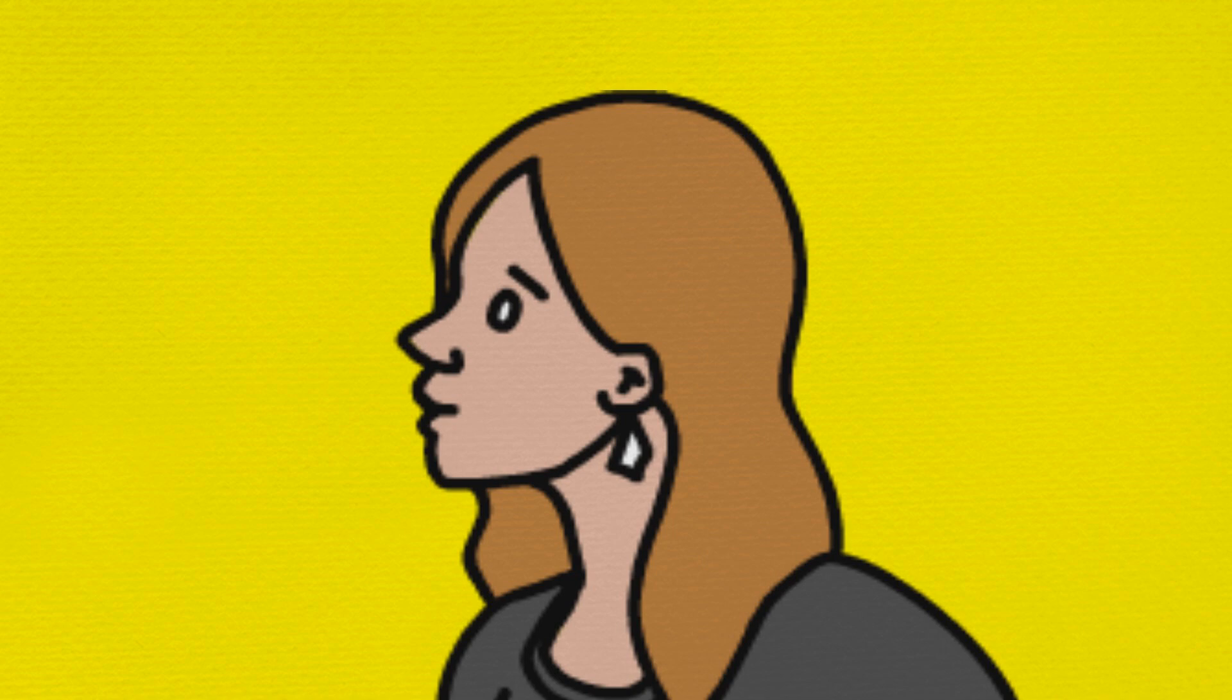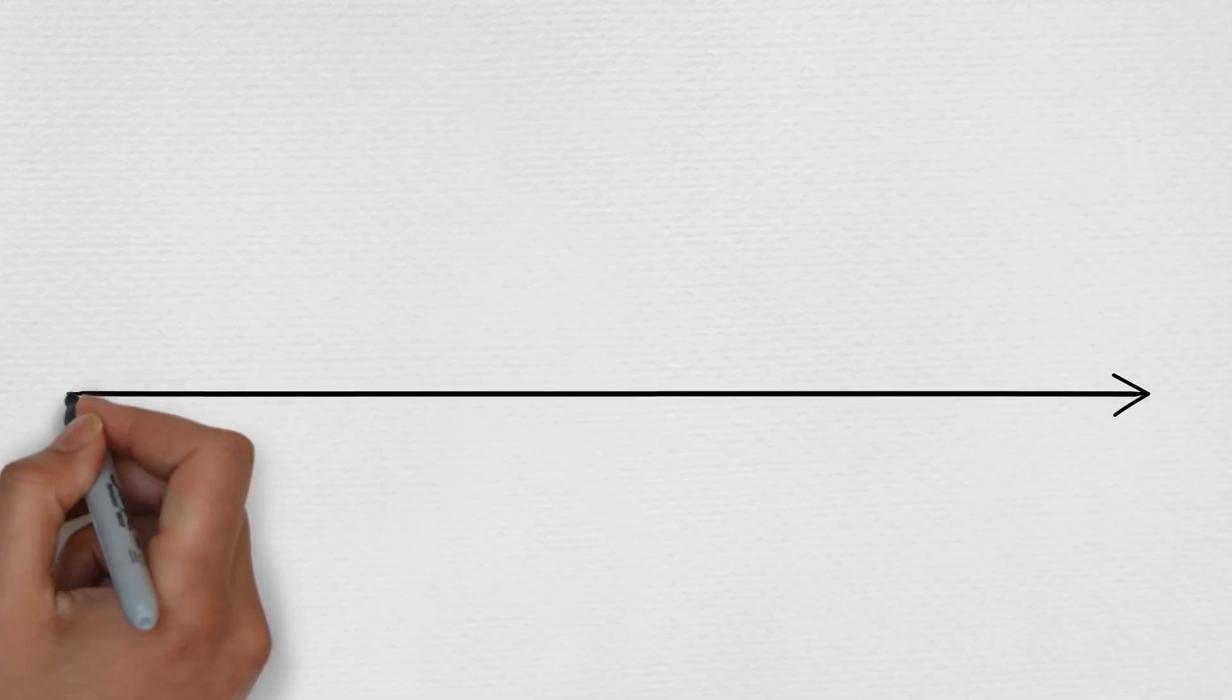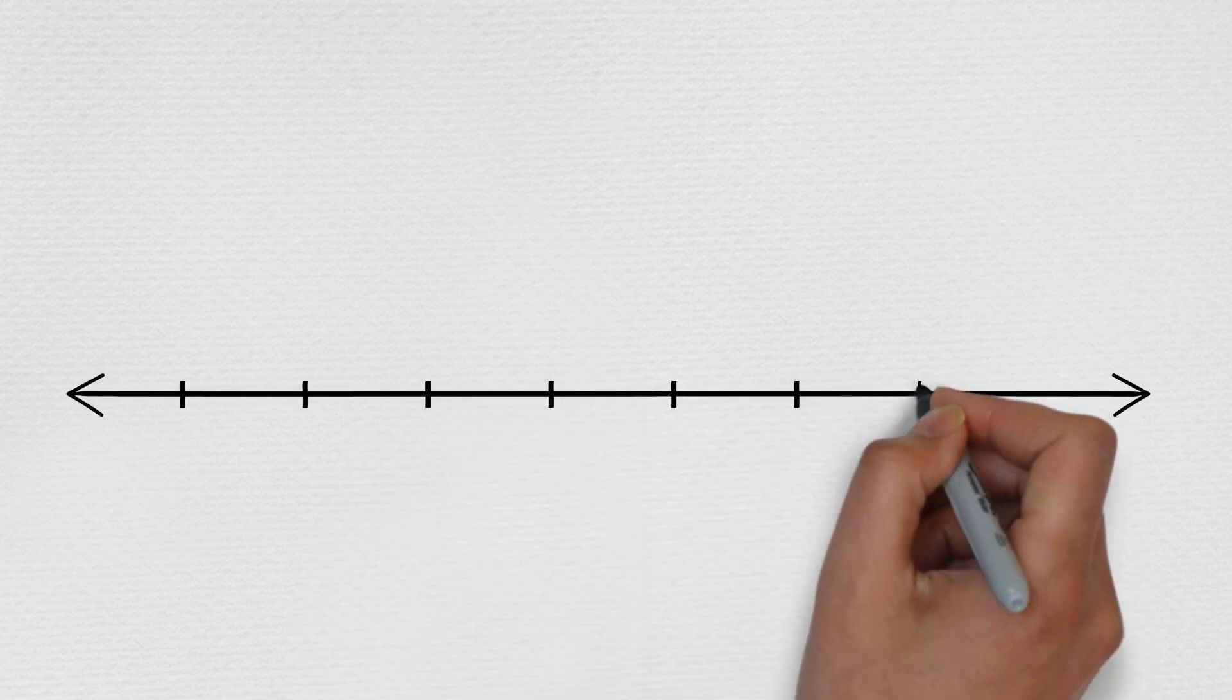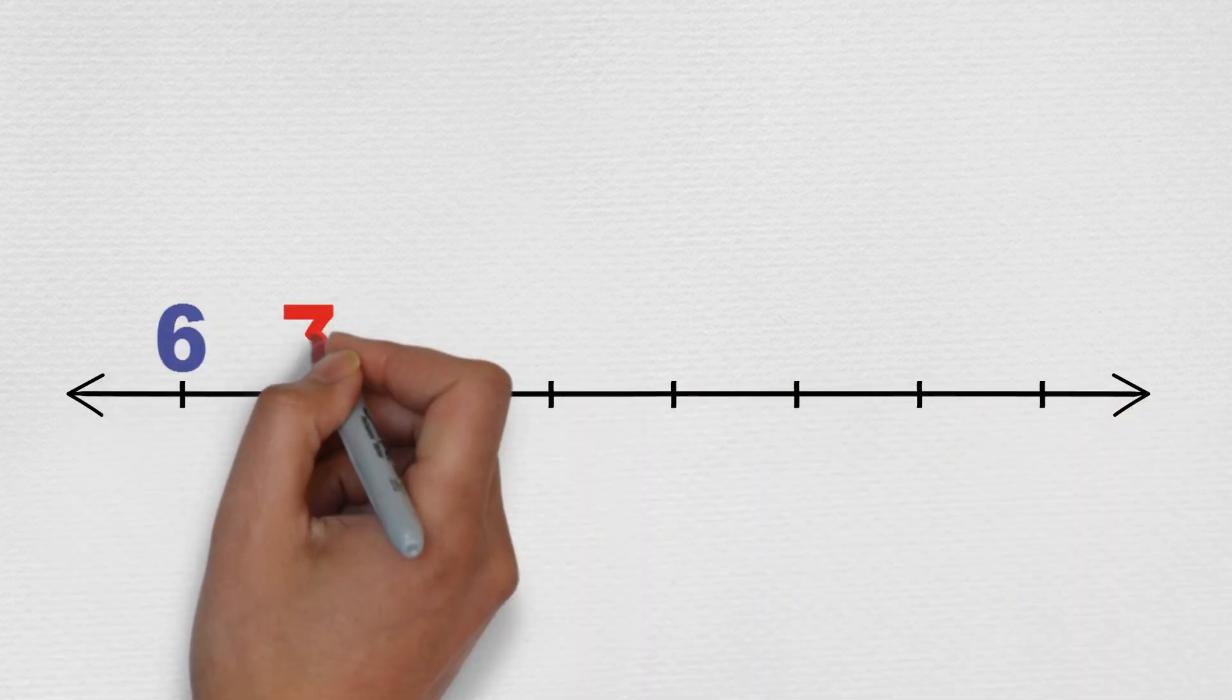With numbers, their difference is how much one number is more or less than the other. If we place those two numbers, 12 and 7, on a number line, we can easily see their difference.